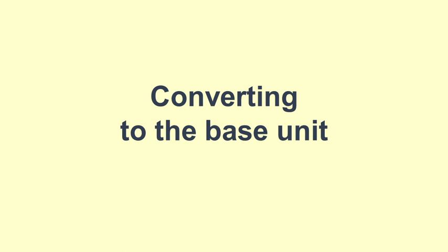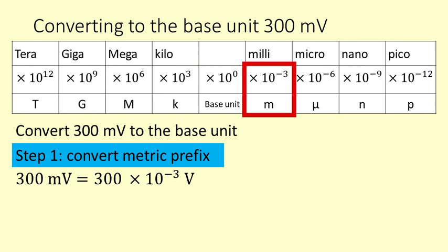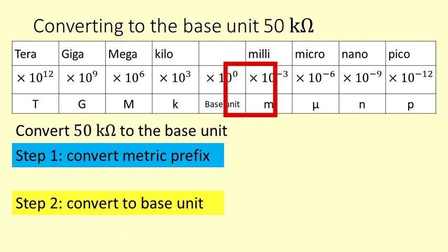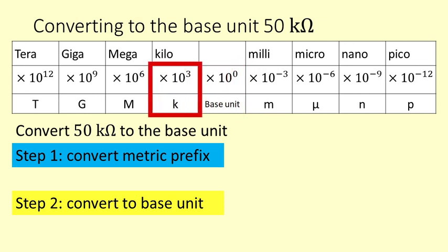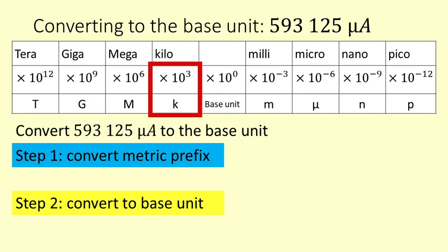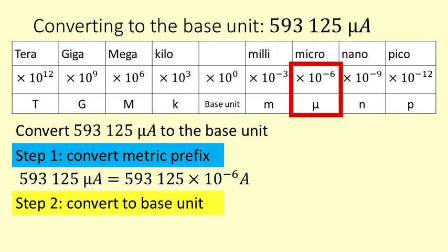Converting to the base unit. When using formulas we often need to put a unit in terms of the base unit. For example, 300 millivolts: first we replace the milli prefix with times 10 to the negative 3 — or we can put it into regular number form, which gives us 0.3 volts. 50 kilo-ohms: kilo becomes 10 to the 3, so 50 kilo-ohms is 50,000 ohms. 593,125 micro-amps: micro is times 10 to the negative 6, giving 0.593125 amps.